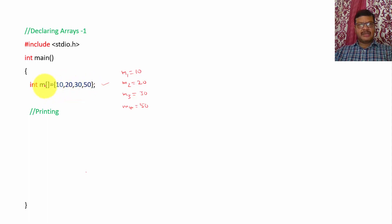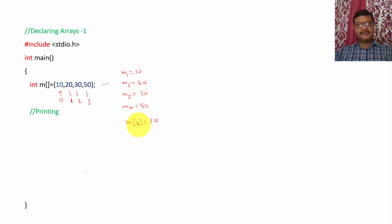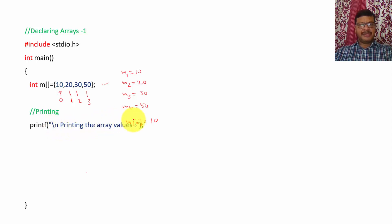Now we have stored four values in this array. In the array, the location of the first value is always indicated with zero. So the first position is 0, second is 1, third is 2, fourth is 3. That means for four values the location starts from zero and ends with three. So this 10 you can retrieve by writing m[0], which is 10. m[1] is 20. In this way we can retrieve the values from the array and print them using printf with backslash n for a new line.